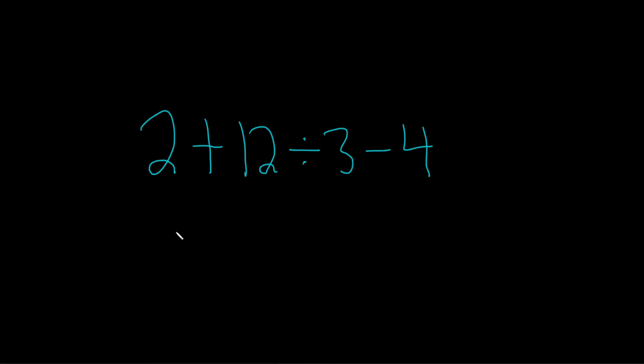Simplify the number expression. So the rule is we first do multiplication and division from left to right, and then we do addition and subtraction from left to right.